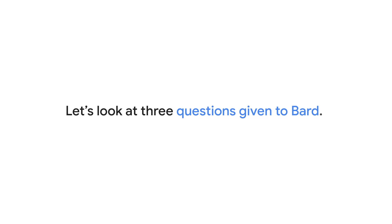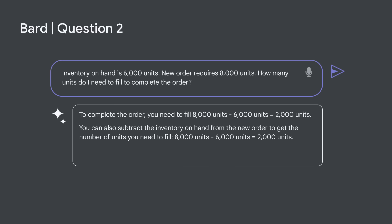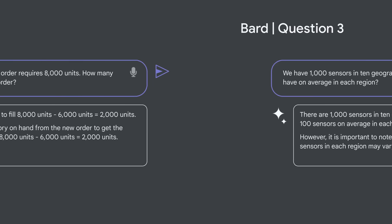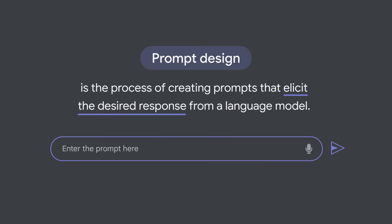Let's look at three questions given to Bard, a large language model chatbot developed by Google AI. Question 1: This year's sales are $100,000. Expenses are $60,000. How much is net profit? Bard first shares how net profit is calculated, then performs the calculation, then provides the definition of net profit. Here's another question: Inventory on hand is 6,000 units. A new order requires 8,000 units. How many units do I need to fill to complete the order? Again, Bard answers the question by performing the calculation. In our last example, we have 1,000 sensors in 10 geographic regions. How many sensors do we have, on average, in each region? Bard answers the question with an example on how to solve the problem and some additional context. In each of our questions, a desired response was obtained.